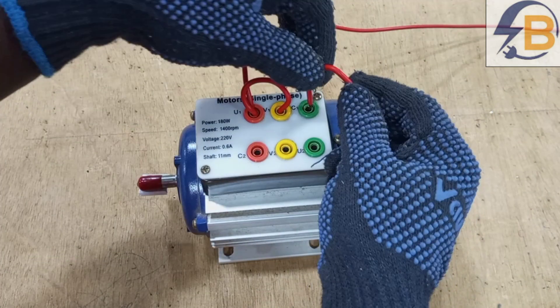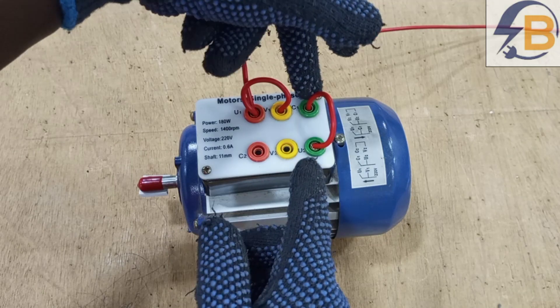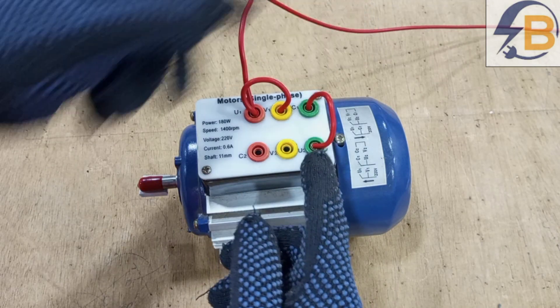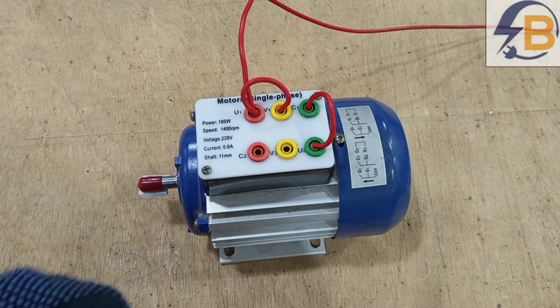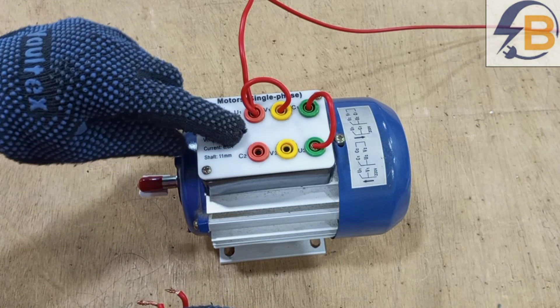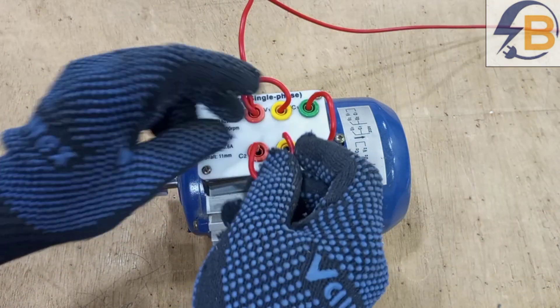So C1 to U2. So we are connecting one end of the capacitor to the end of the main winding. And then again, we will connect the other terminal of the capacitor to the end of the auxiliary winding, like this.